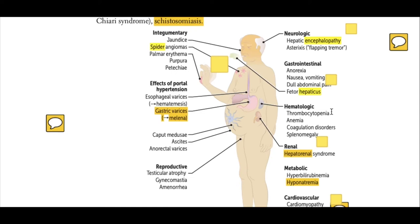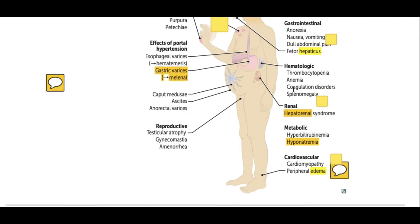The hematologic system is affected as well. The first condition is thrombocytopenia — decreased platelet count — which leads to bleeding. Another condition is anemia, a decrease in red blood cell count. The third is coagulation disorders, where the blood cannot form proper clots, also resulting in bleeding. Splenomegaly, or enlargement of the spleen, also occurs.